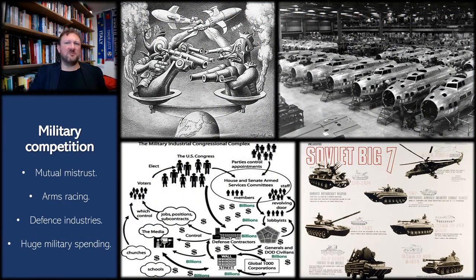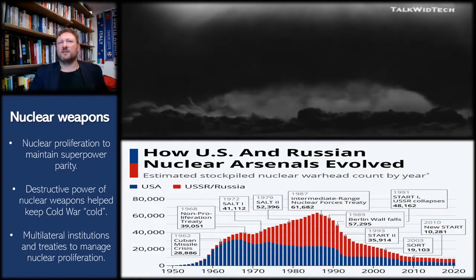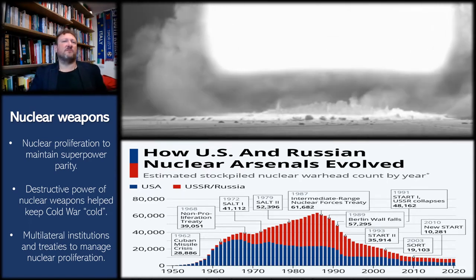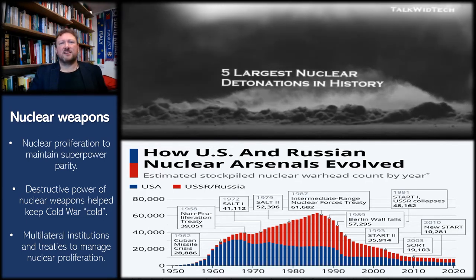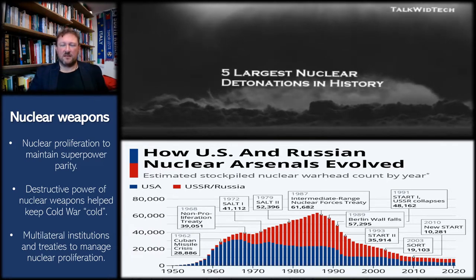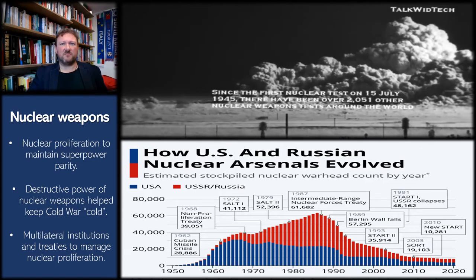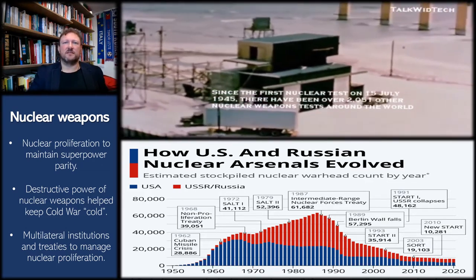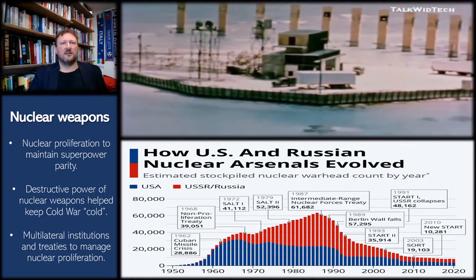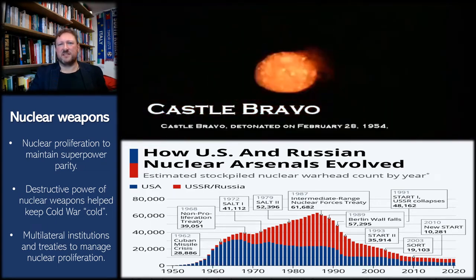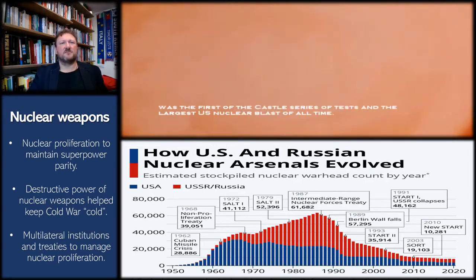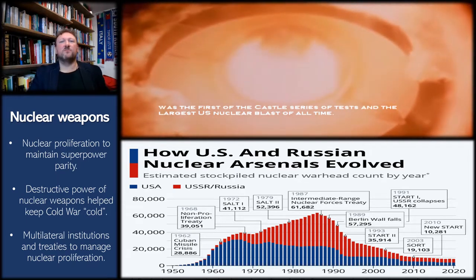Because of their shared mistrust, the two superpowers engaged in intense military competition. While they never fought each other directly, they engaged in an intense arms race, building up their conventional military forces through extensive military industrial complexes and enormous military budgets. Nowhere was Cold War arms racing more conspicuous or more dangerous than in the proliferation of nuclear weapons. Both superpowers rapidly expanded their stockpiles of nuclear warheads to maintain parity with each other, and conducted thousands of nuclear weapons tests — on the ground, underground, underwater, and high in the atmosphere.